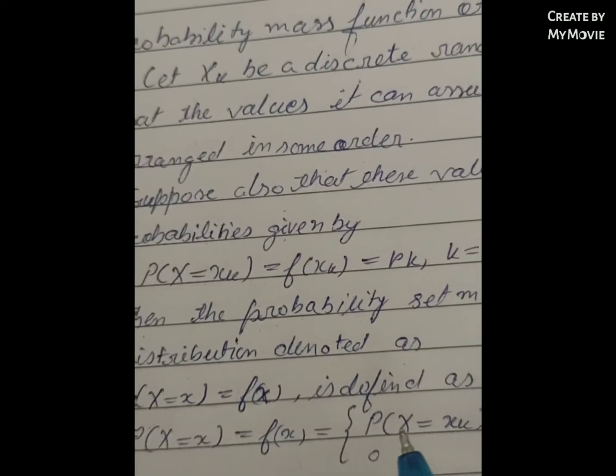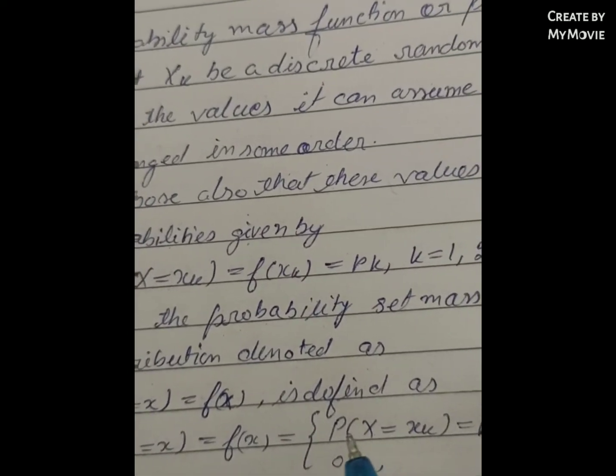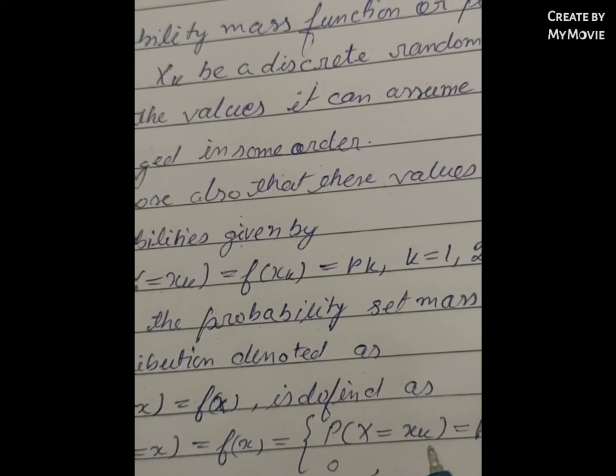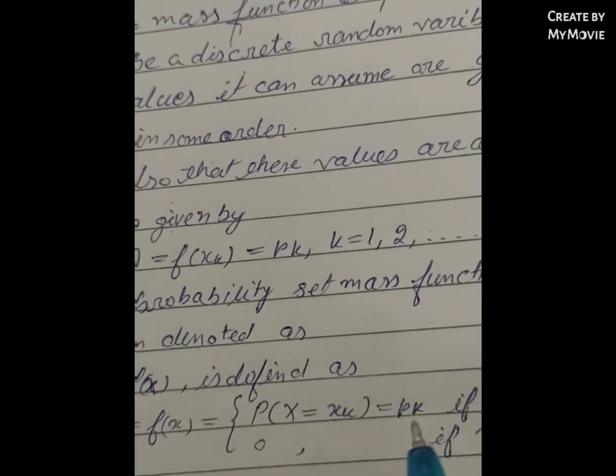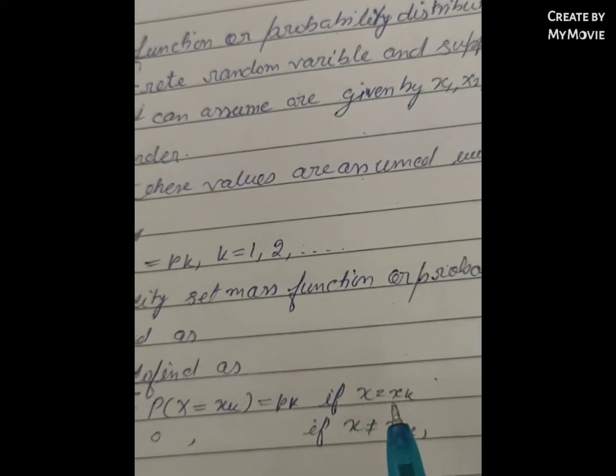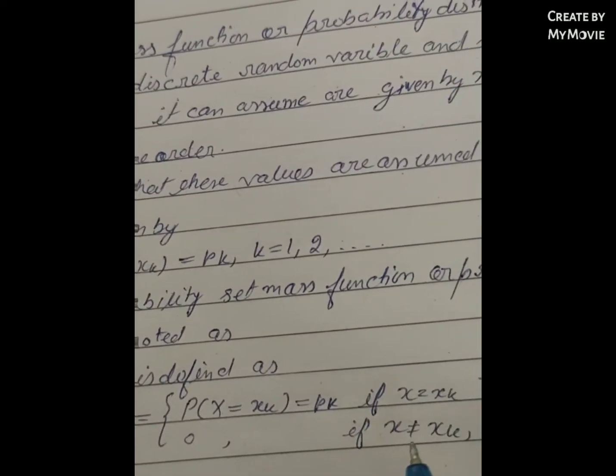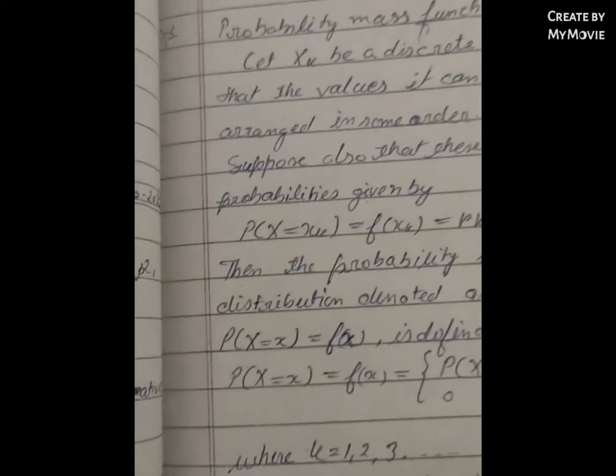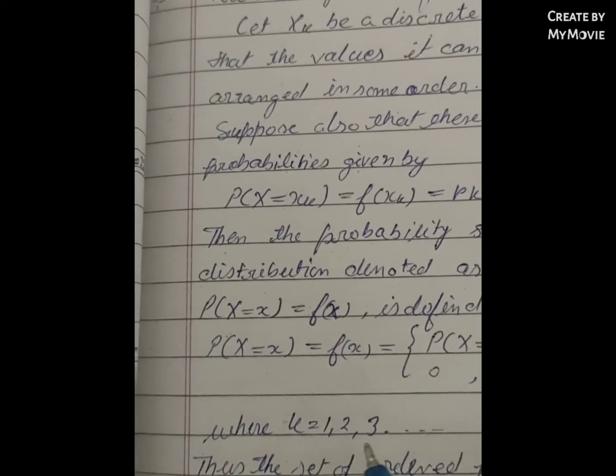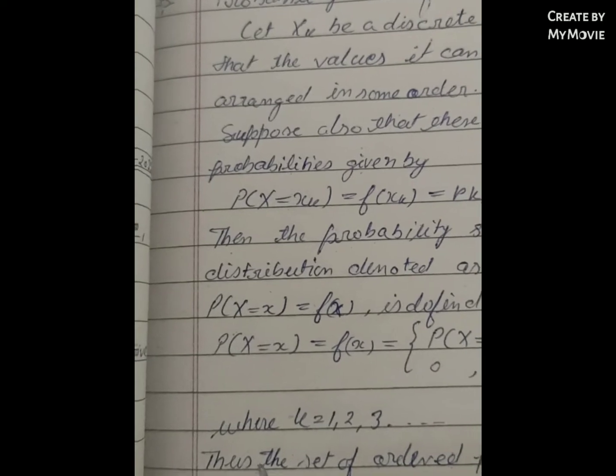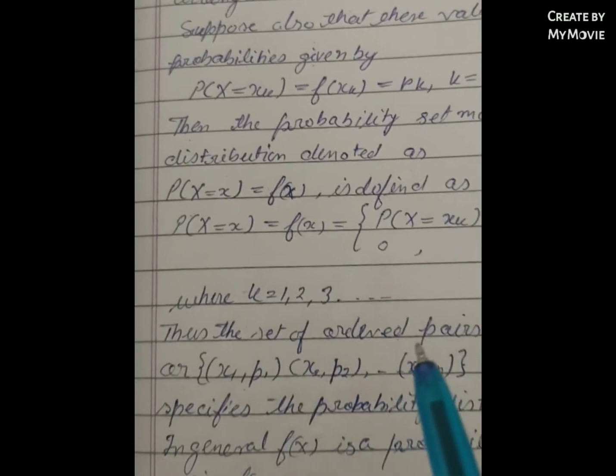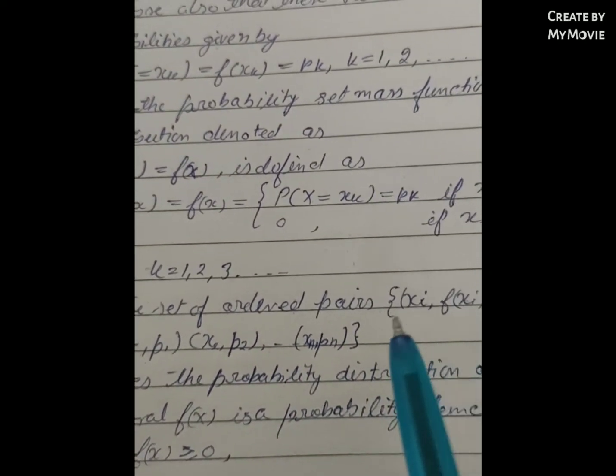P(X = xk) equals p(xk) when x equals xk, and zero if x does not equal xk, where k equals 1, 2, 3 and so on. Thus the set of ordered pairs, curly bracket starts: